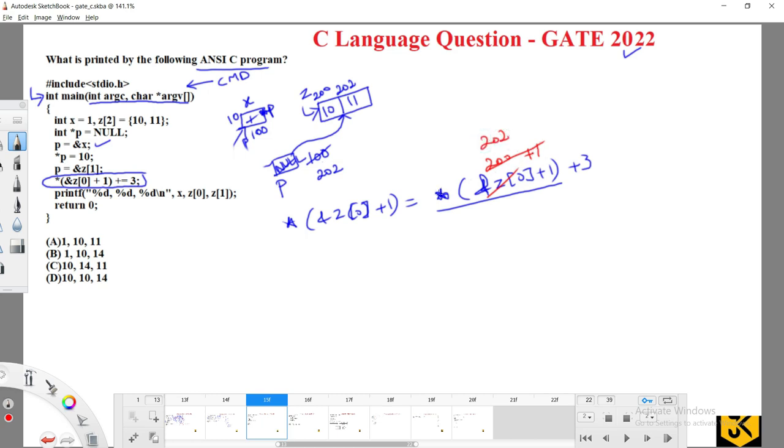11 + 3 is 14. That 14 will be updated to the corresponding location. What is that corresponding location? Address of z[0] + 1 is 202. So the entire thing is 202, and *202 will be replaced with the value 14.